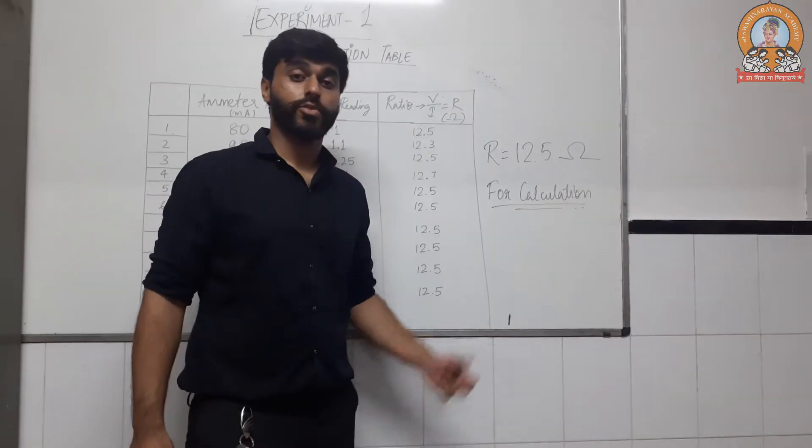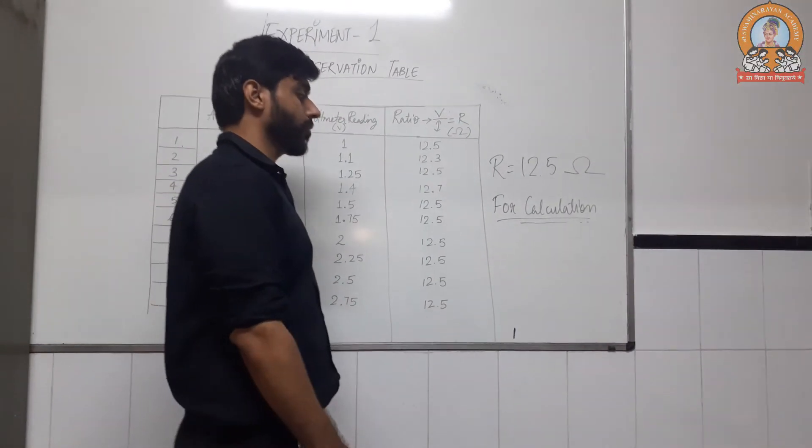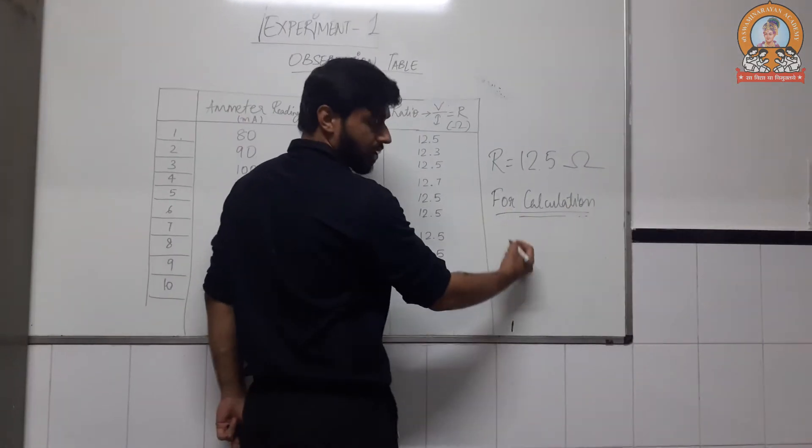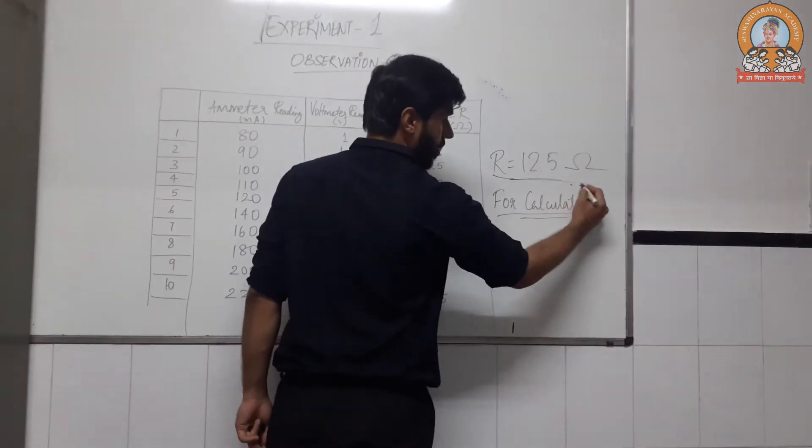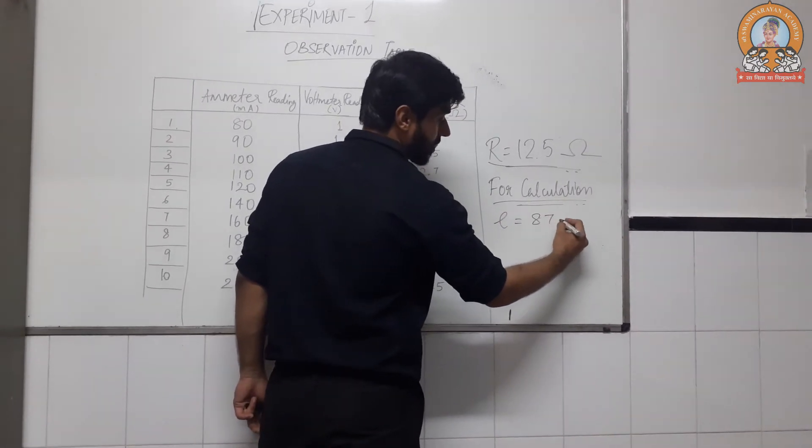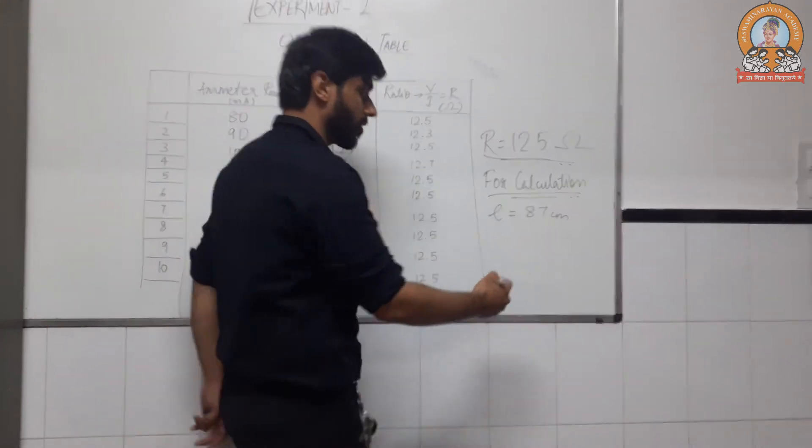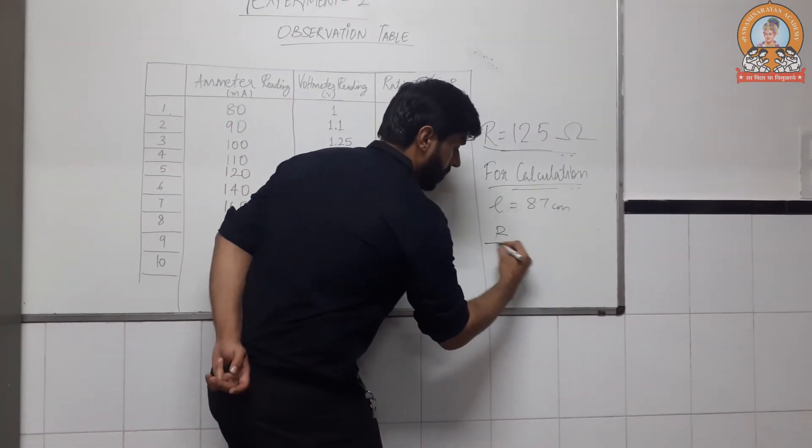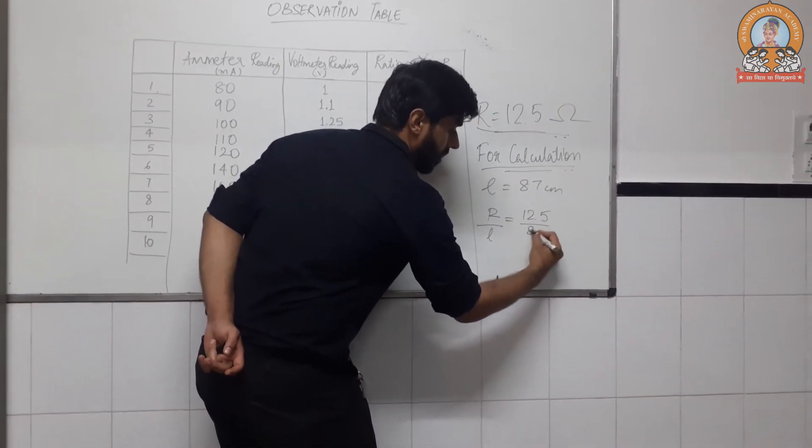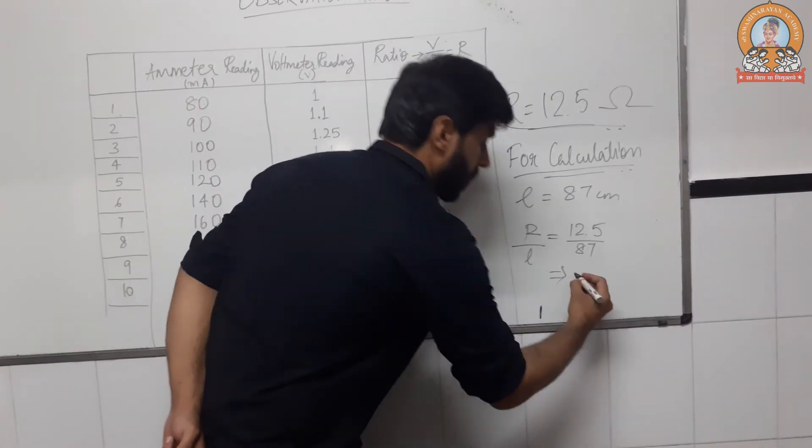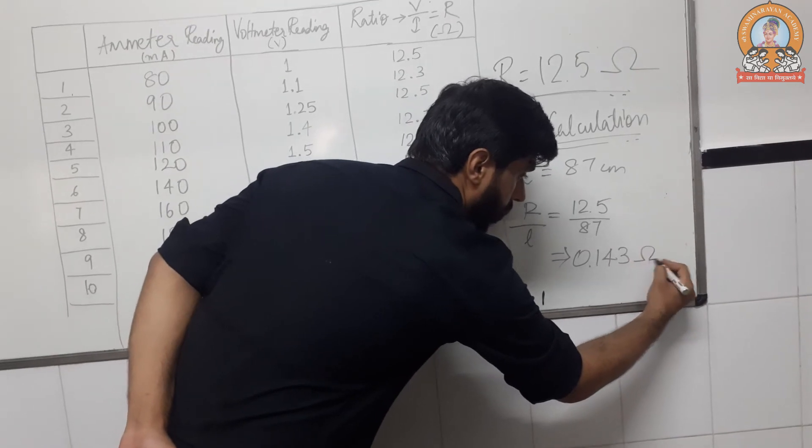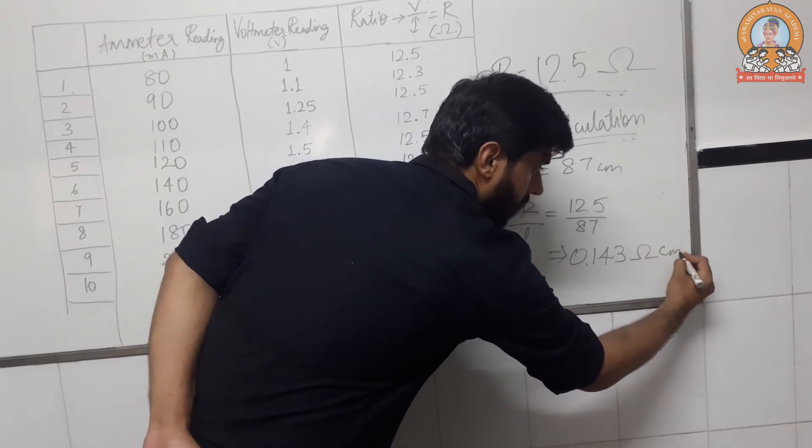So this wire is around 87 centimeter. So for the calculation part, our resistance was 12.5 ohm. Our length came out to be, length of the wire came out to be 87 centimeter. Now resistance per given centimeter, R by L will be 12.5 divided by 87. Now this will be 0.143 ohm per centimeter.